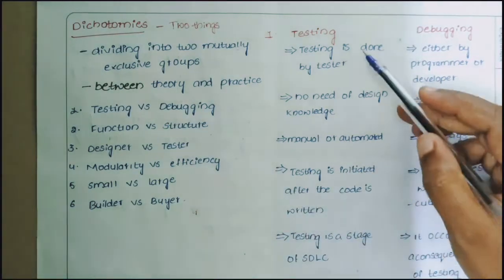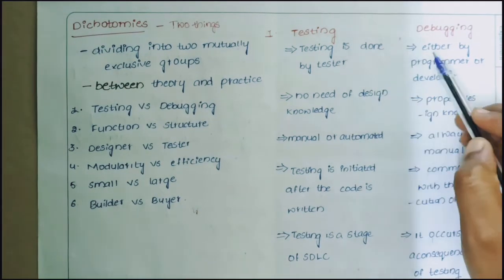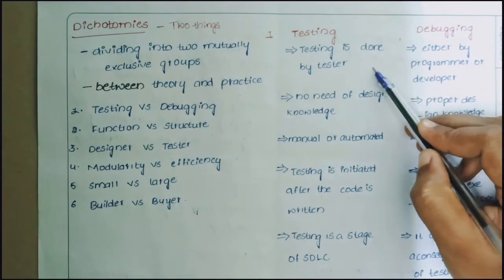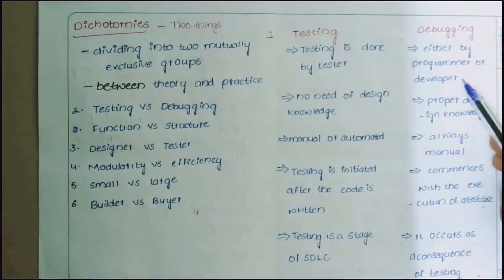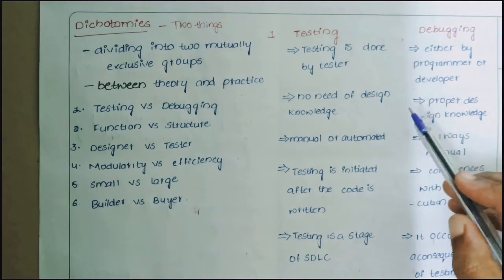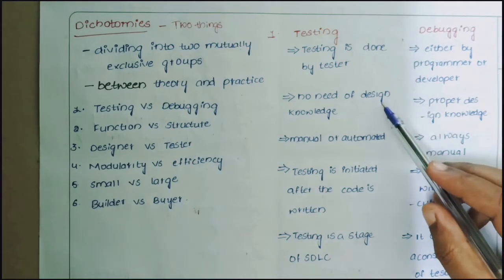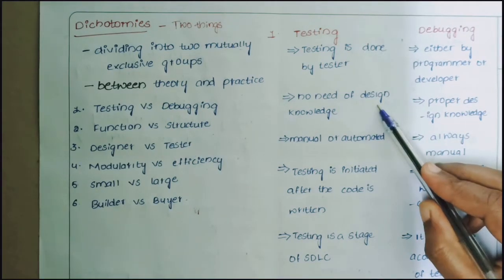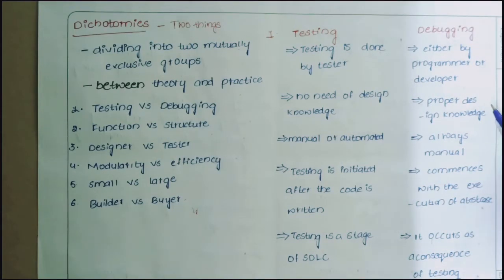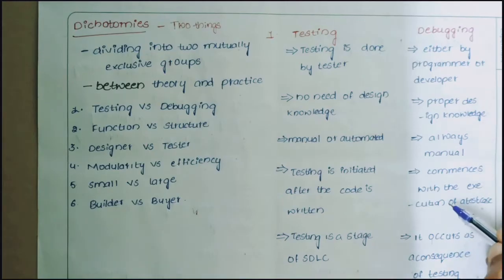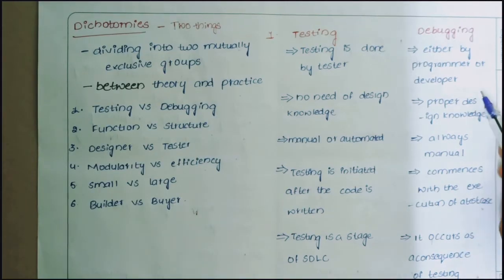Coming to the first dichotomy — testing versus debugging. Testing is done by a tester, while debugging is done by either a programmer or developer who is developing the code. In testing there is no need of design knowledge, but in debugging we need proper design knowledge because it is done by the developer.